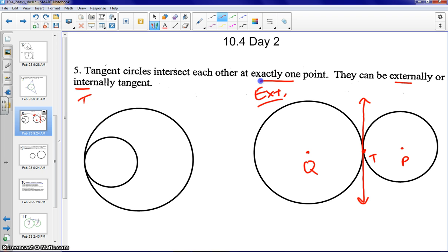On the left-hand side, this is an example of internally tangent. So again, let me just draw a line here. Point of tangency is T through circle P and Q.